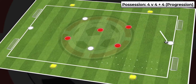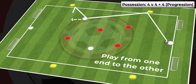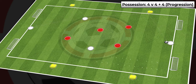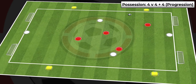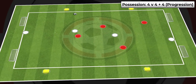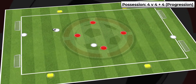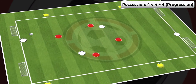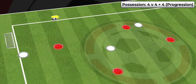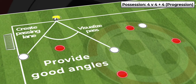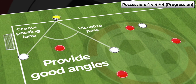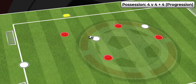The objective in this activity is for the attacking team to play from one end of the field to the other using at least one of the side players. The team on the side of the field, in this case the yellow team, are providing support to the white team and should try to provide good angles for the central players.